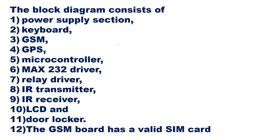The block diagram consists of the following components: power supply section, keyboard, GSM, GPS, microcontroller, MAX232 driver, relay driver, infrared transmitter, infrared receiver, LCD display, and door locker.